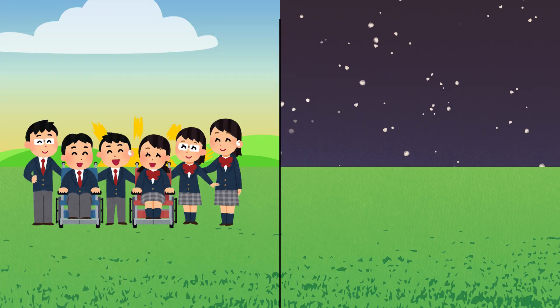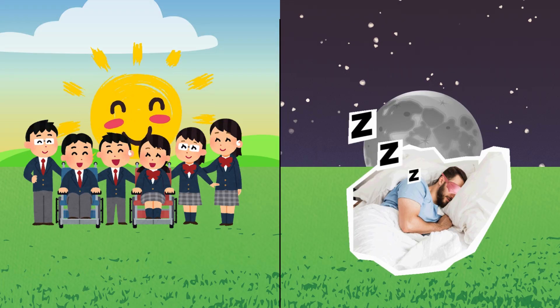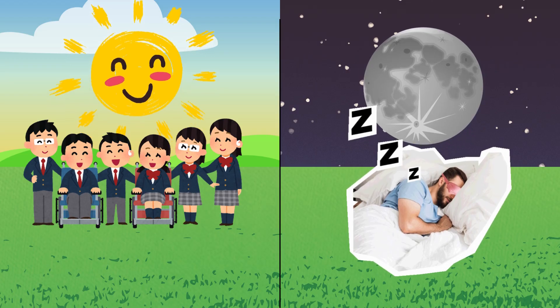The sun gives us light and warmth during the day. The moon glows at night and lights up the sky while we sleep.